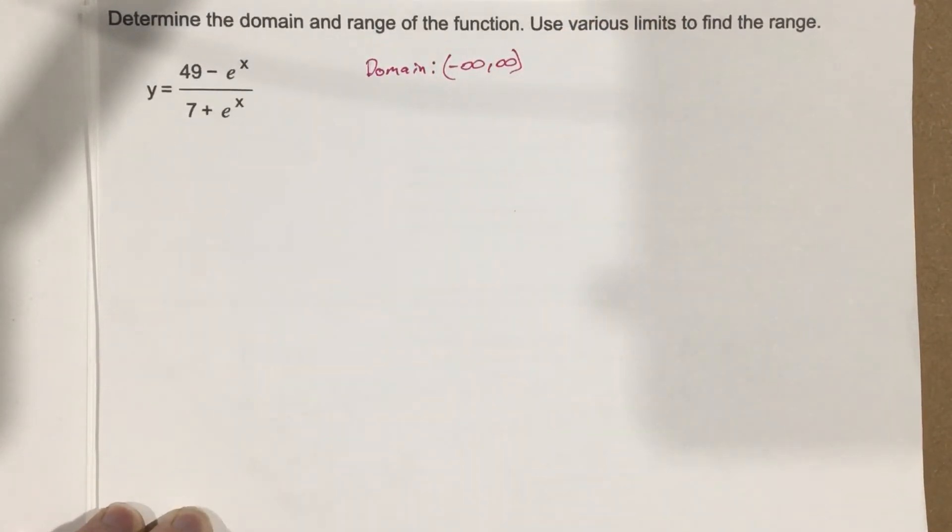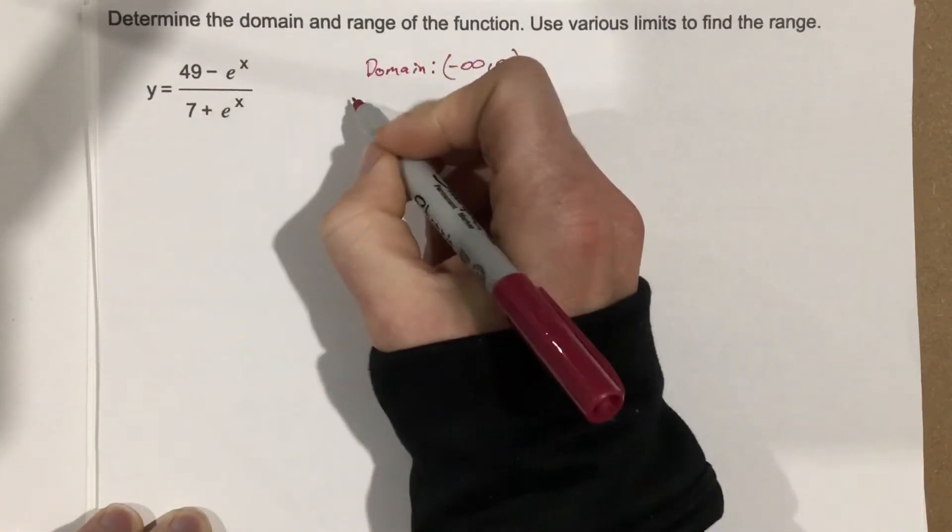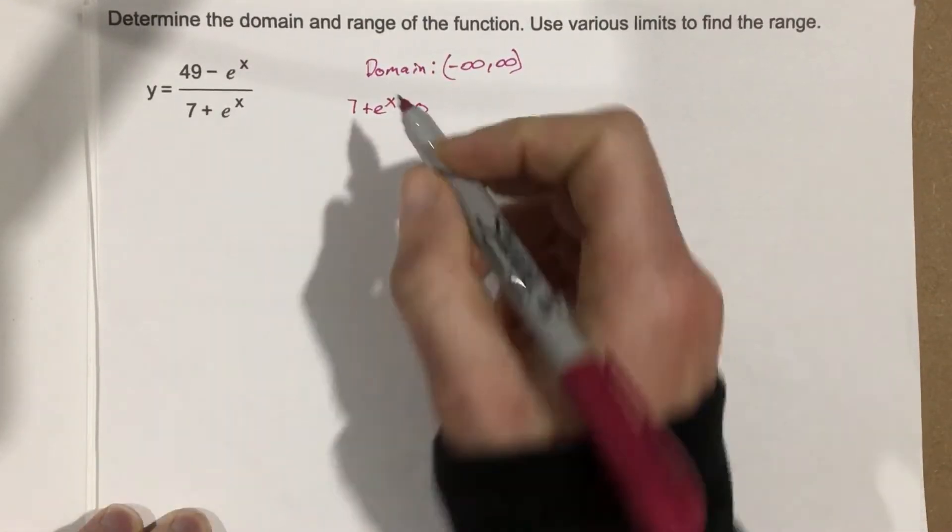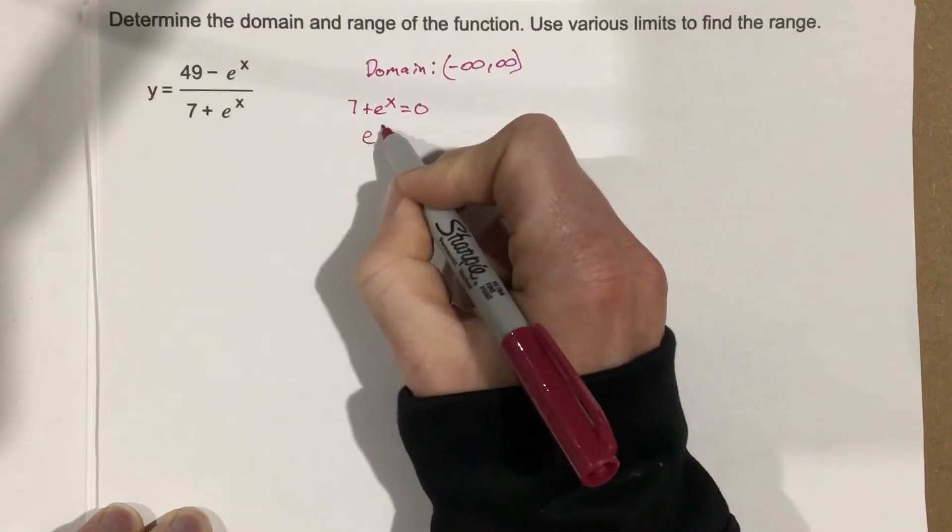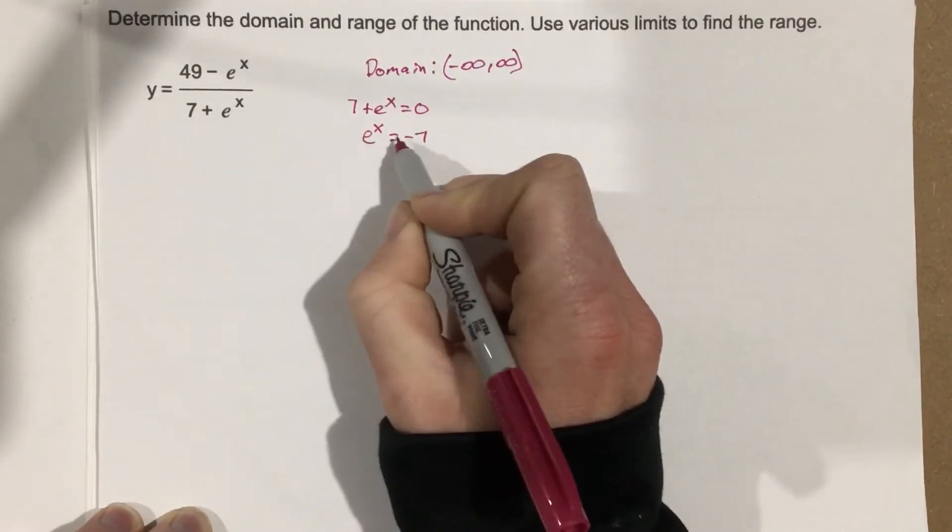And the other way you could figure this out is by essentially going through and setting this equal to 0. So you could say 7 plus e to the x equal to 0, like when you try to find your domain restrictions. We subtract 7 over, you get e to the x equals negative 7. At this point, you want to try and do a natural log on each side.